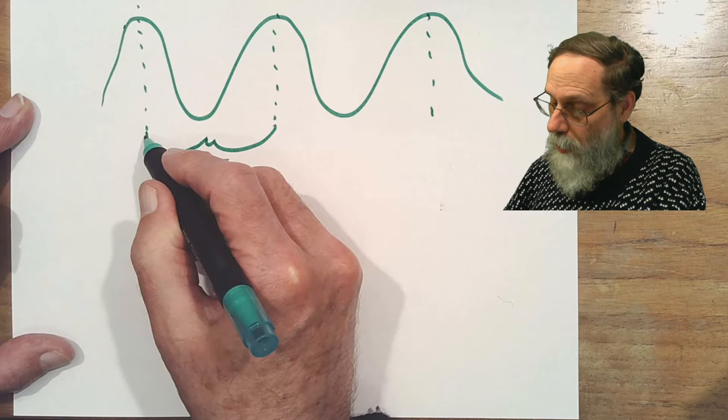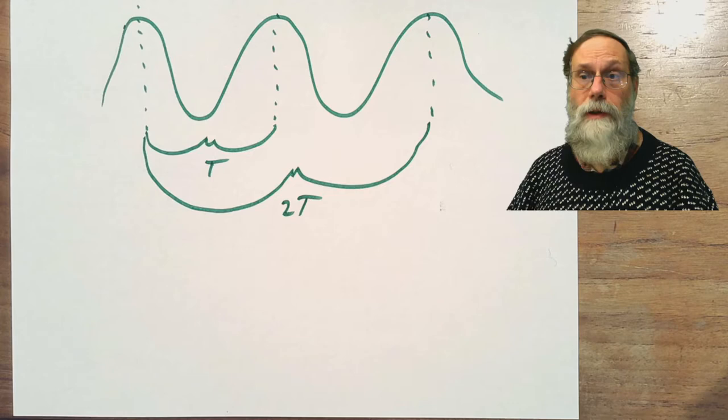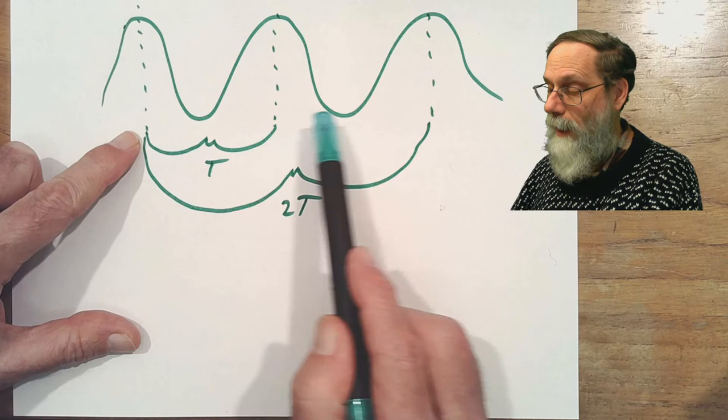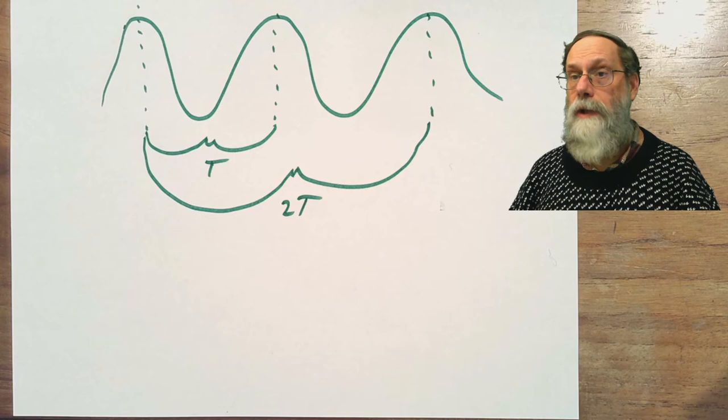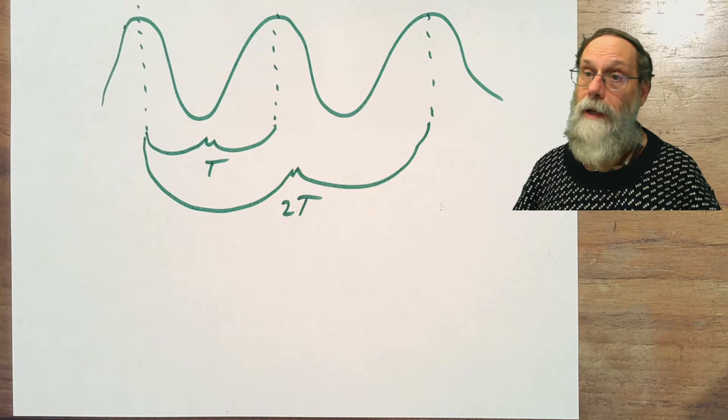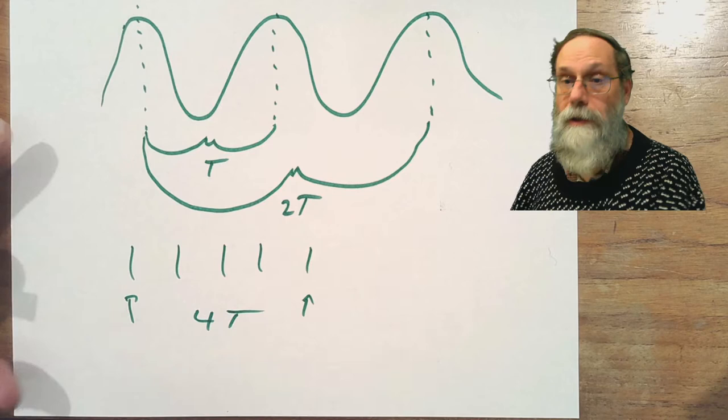Or I could look at two periods and take that time divided by two to get the period. Notice that to do two periods, I have to have three events. This off-by-one error is very common when students try to estimate period because they'll say, 'I've got five events here,' so they'll take the total time and divide by five. But if you have five events, the time from the first one to the last one is only four periods.